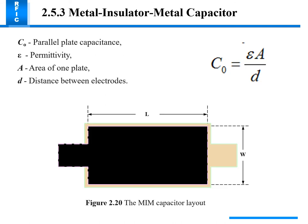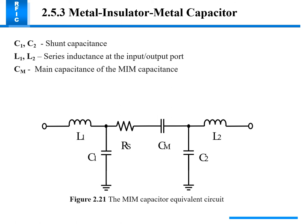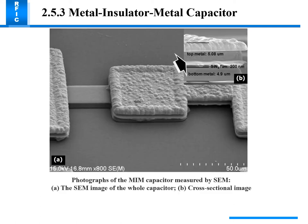The MIM capacitor layout uses a parallel plate capacitance formula involving permittivity, the area of the first plate, and the distance between two electrodes (t). The MIM capacitor equivalent circuit includes inductor, resistor, and capacitor elements. The SAM photograph of the MIM capacitor shows the whole capacitor; cross-section images show the top metal at 5.08 micrometers and the bottom metal at 4.9 micrometers.